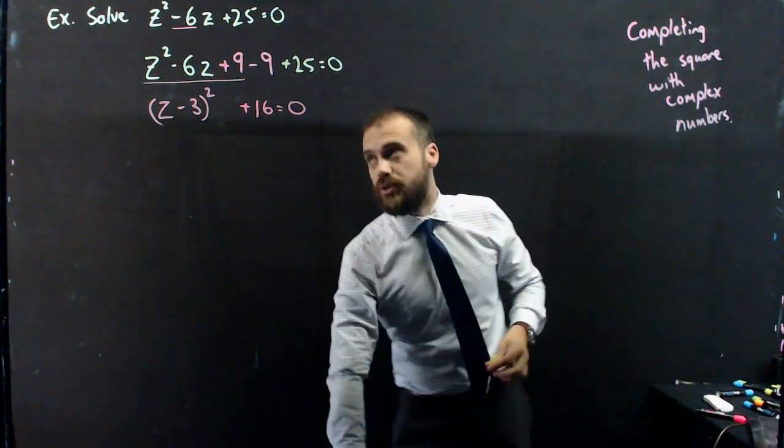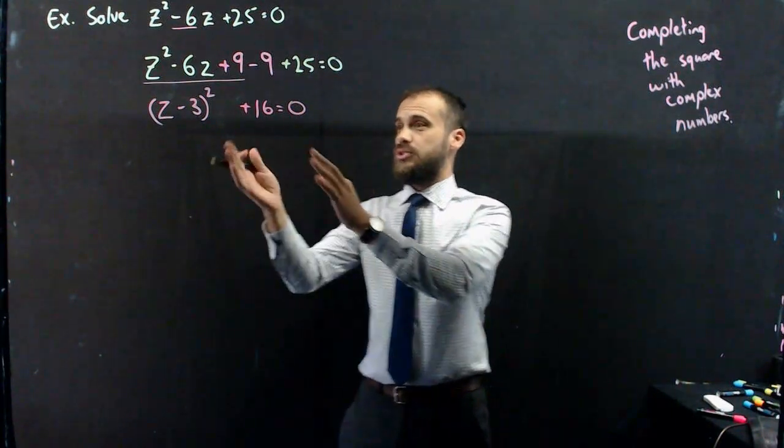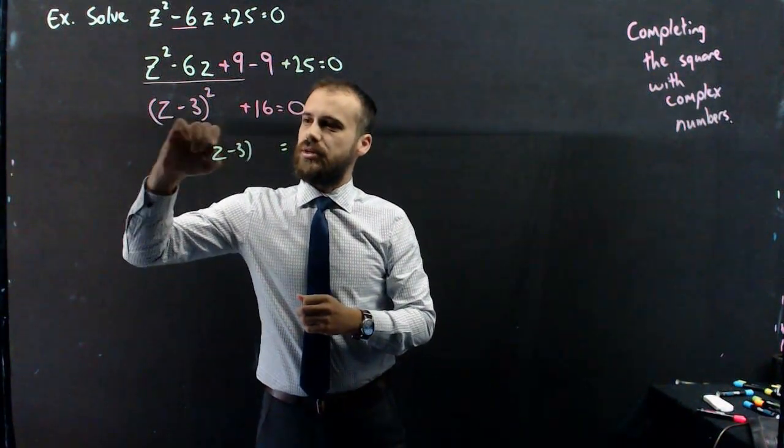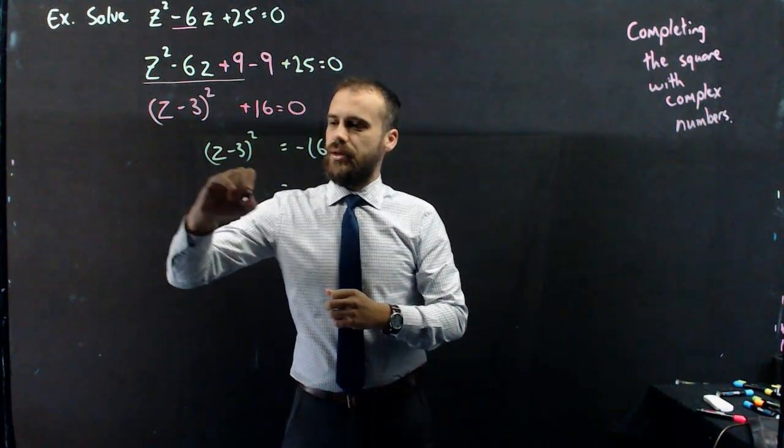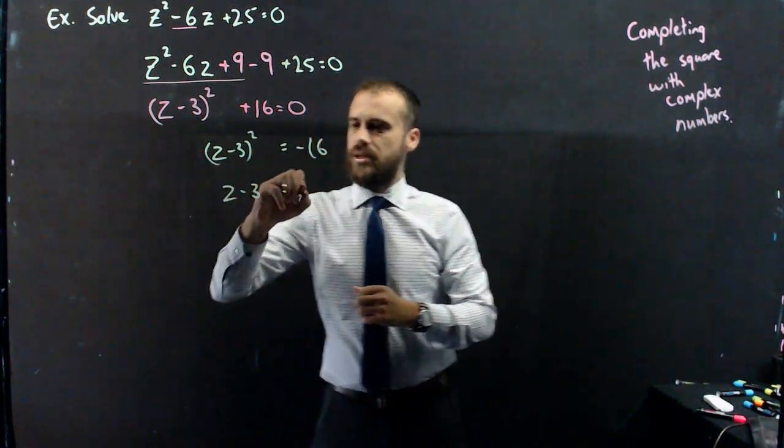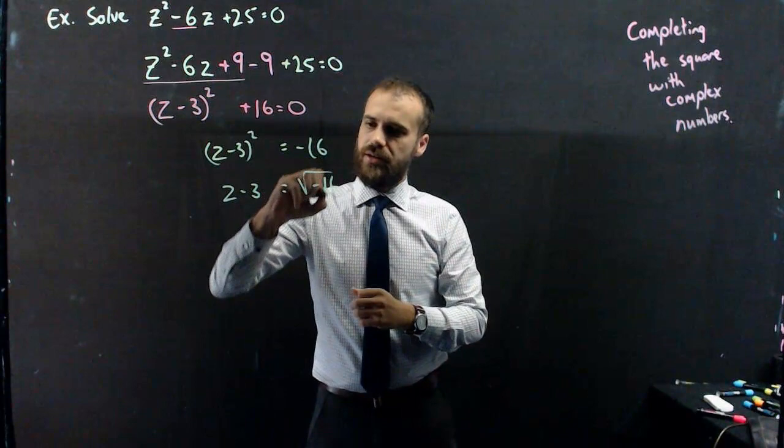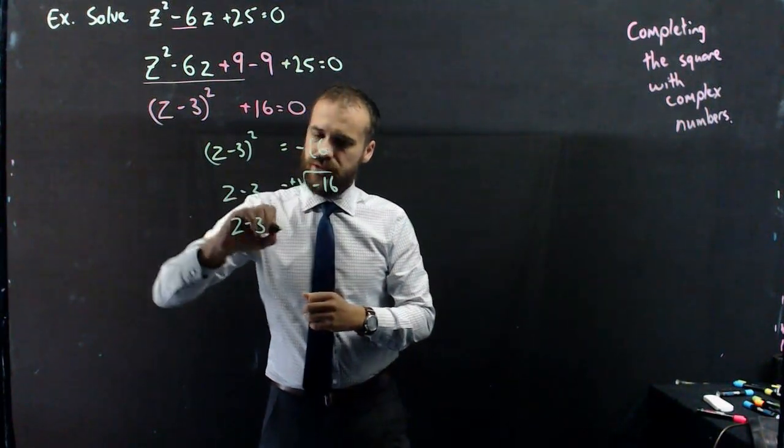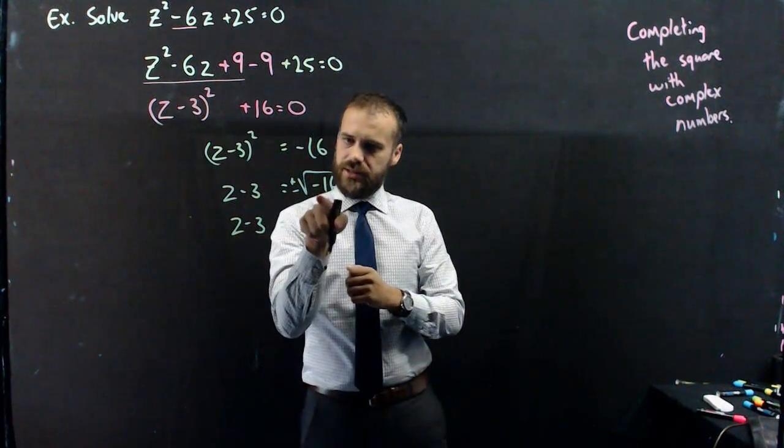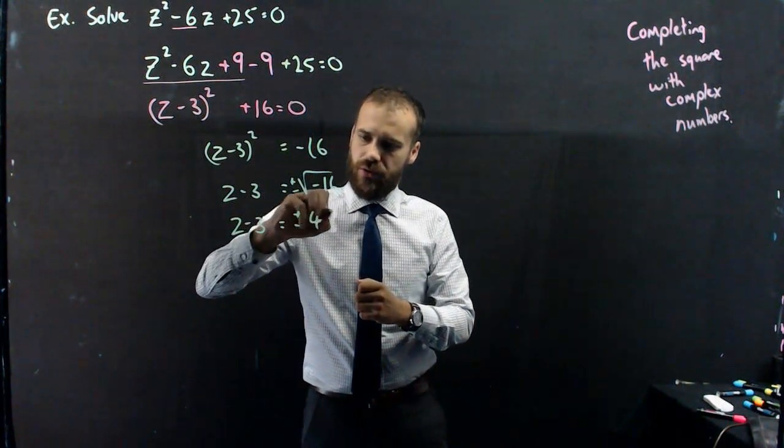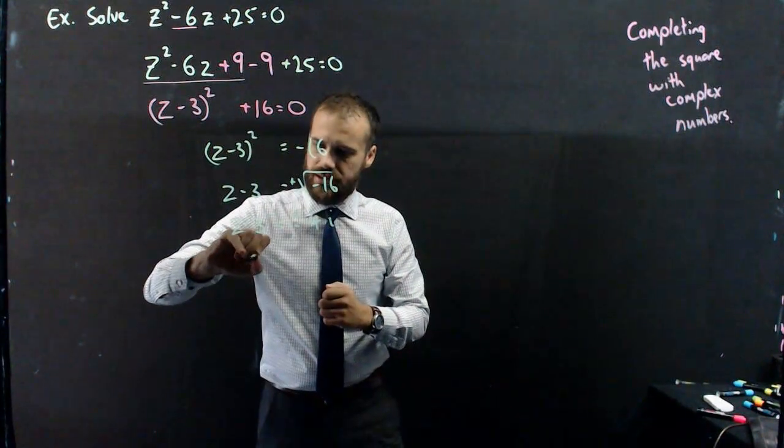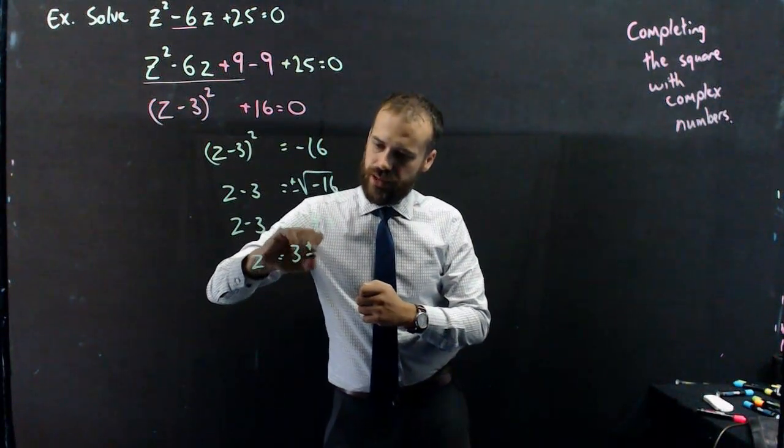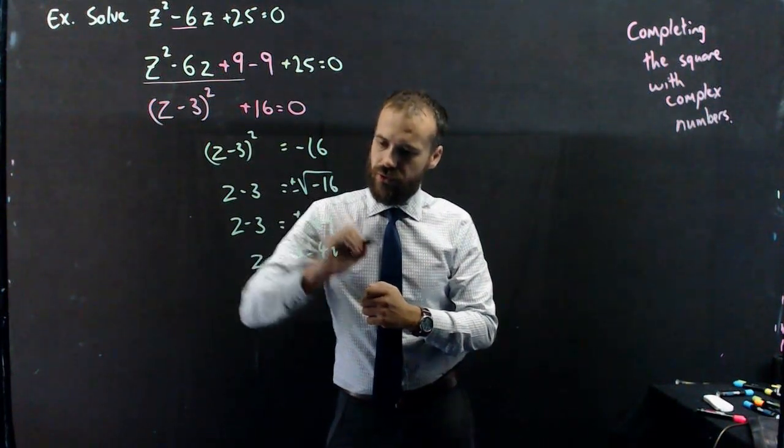All right, why did we do that? Because now we can solve from here. So now I can say that z minus 3 squared minus 16 equals 0. I can say z minus 3 is the square root of negative 16, plus or minus. I can say that z minus 3, that's going to be plus or minus 4i, and z equals 3 plus or minus 4i.